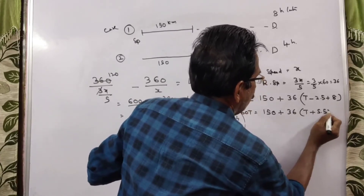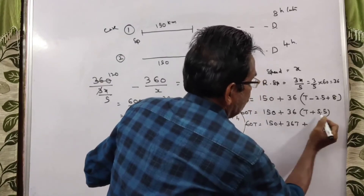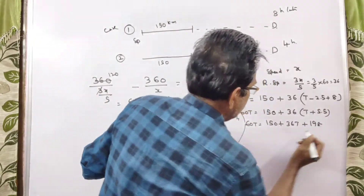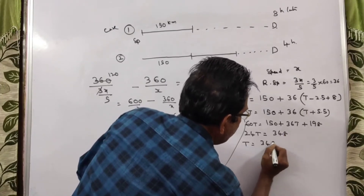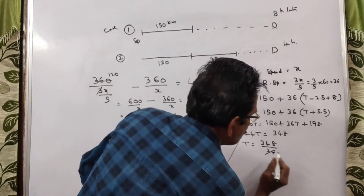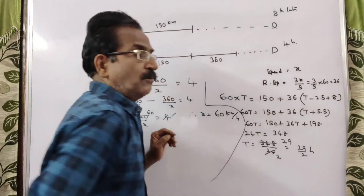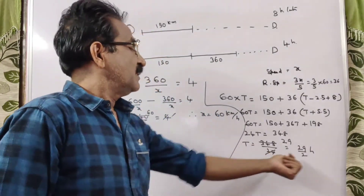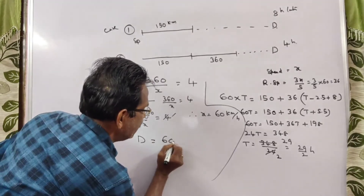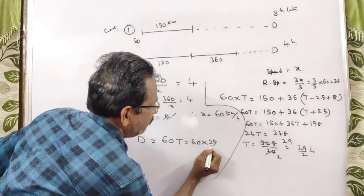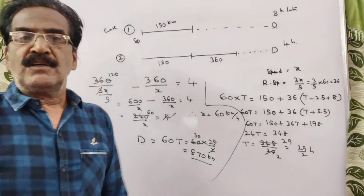Simplifying: 60T equals 150 plus 36T plus 198, so 24T equals 348, therefore T equals 348/24 = 29/2 hours. The total distance equals speed into time = 60 into 29/2 = 870 km. The total distance is 870 km. OK guys, thank you, have a nice day.